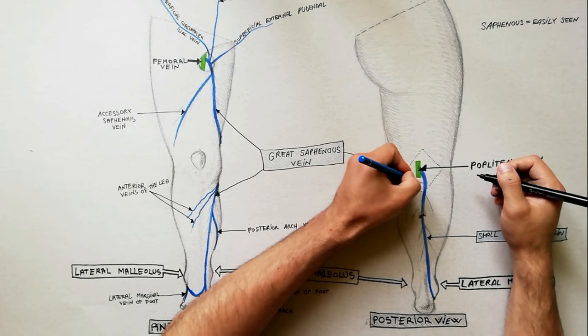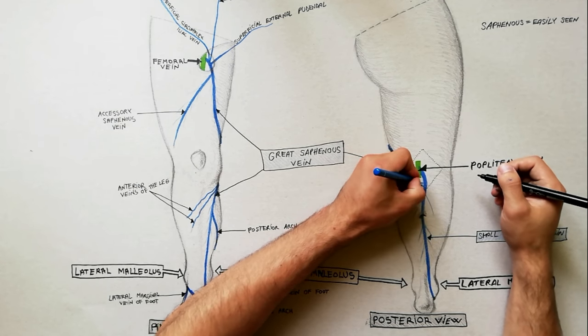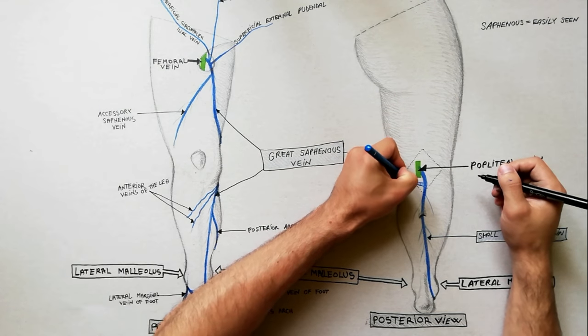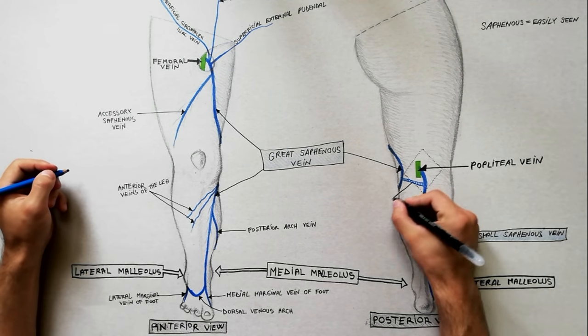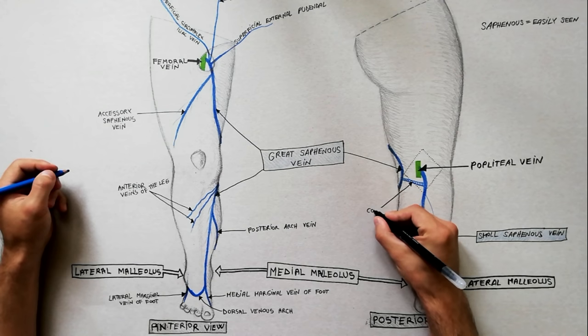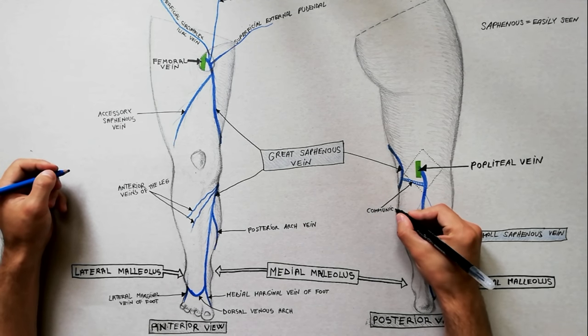Between the great and small saphenous veins, we have two important communications. One communication runs transversally at the level of popliteal fossa.